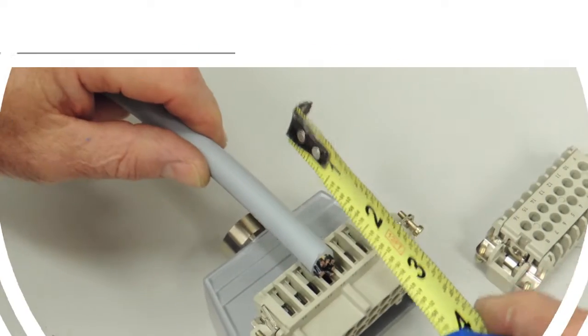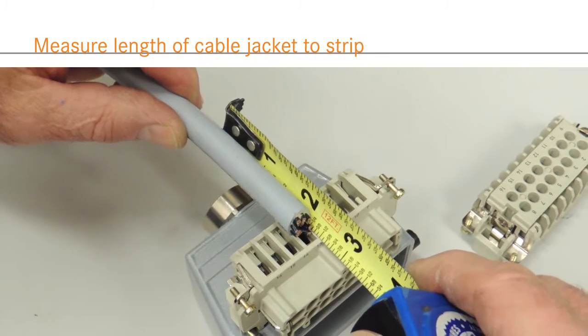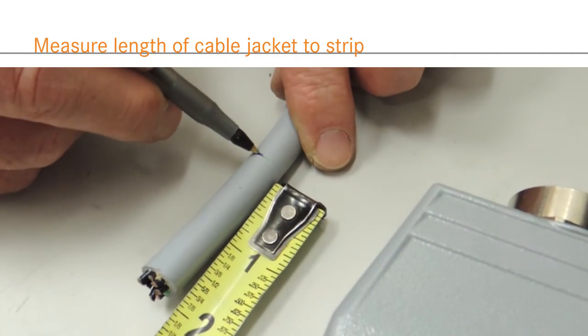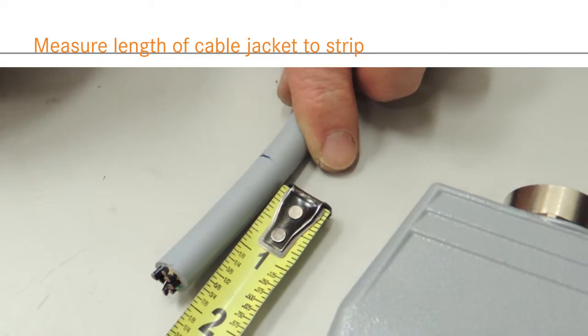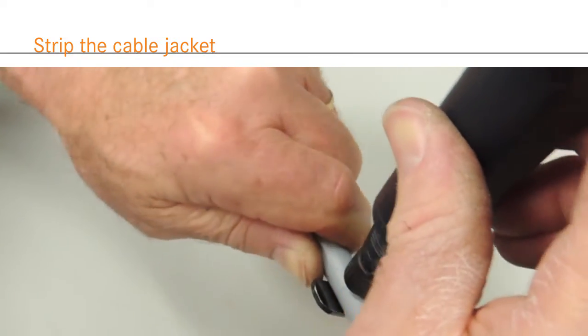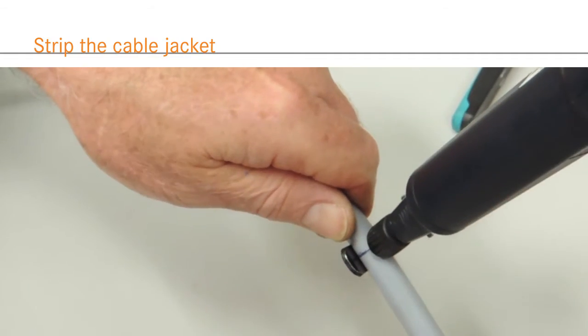As with every termination, first you must strip the cable jacket to allow you to easily terminate the individual conductors. The jacket should be stripped back enough to allow you to easily terminate the individual conductors, but not so much that the jacket is stripped past the hood's gland when assembled. For the housing shown here, 2 inches is a sufficient stripping length.